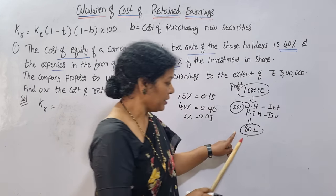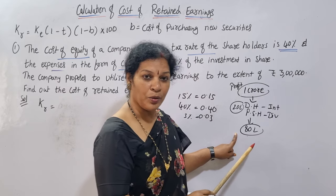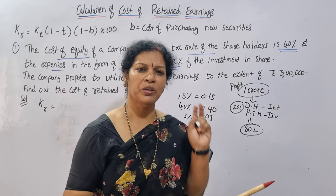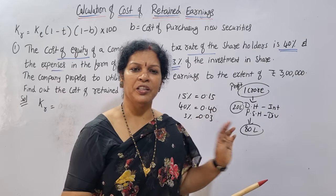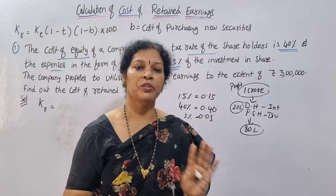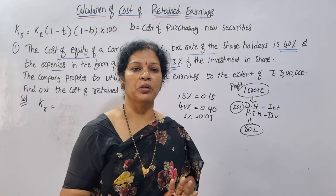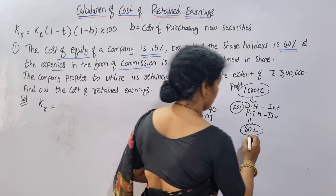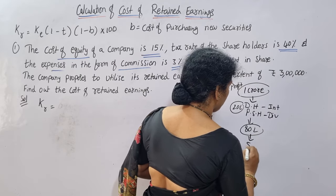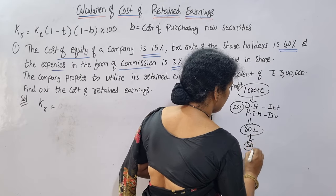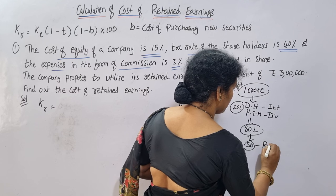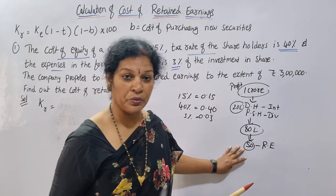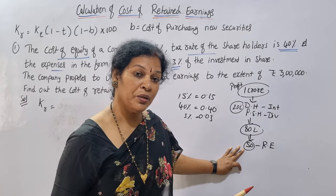The remaining profit of the company is 80 lakhs. In this 80 lakhs, we are going to talk about retained earnings. What are retained earnings? I am going to talk about it.